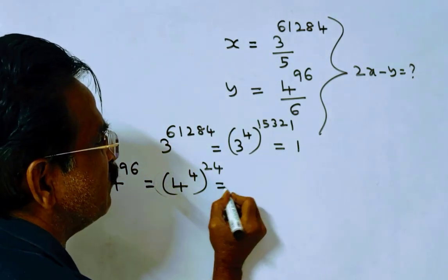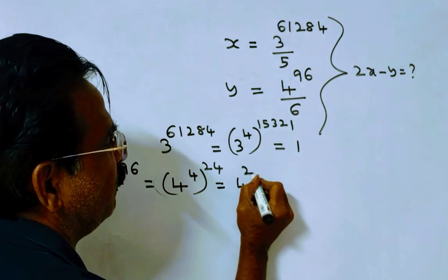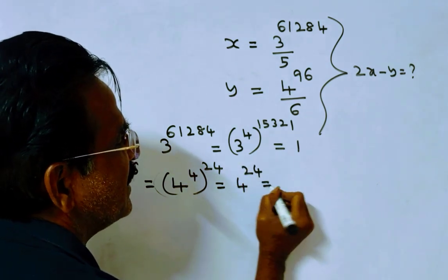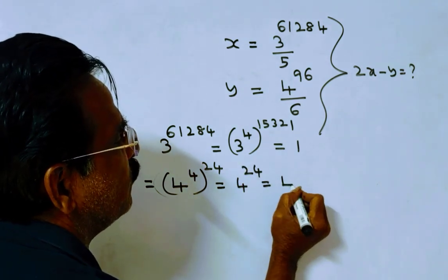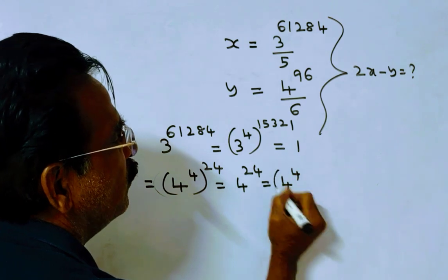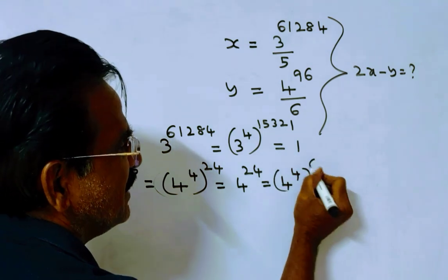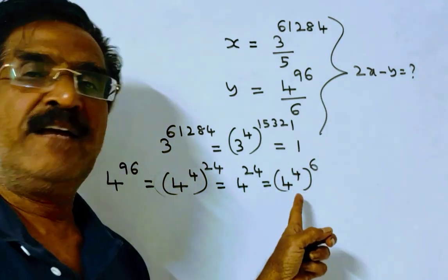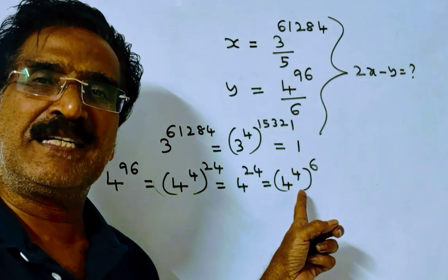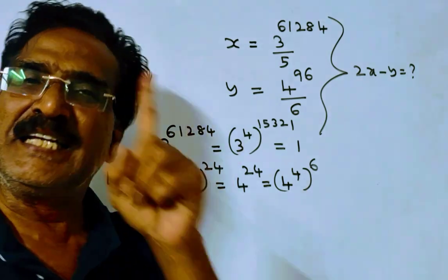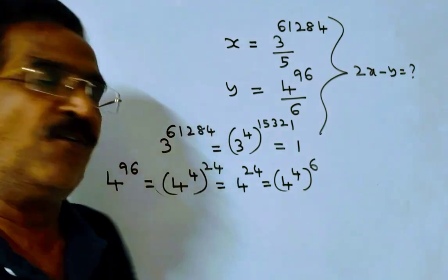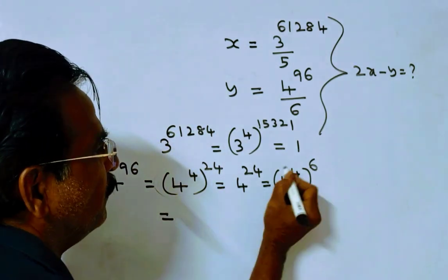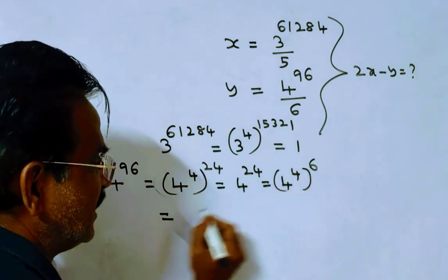So this is equal to 4 power 24. And again, this is equal to 4 power 4, whole power 6. Again, when 4 power 4 is divided by 6, the remainder is 4. So this is equal to 4 power 6.